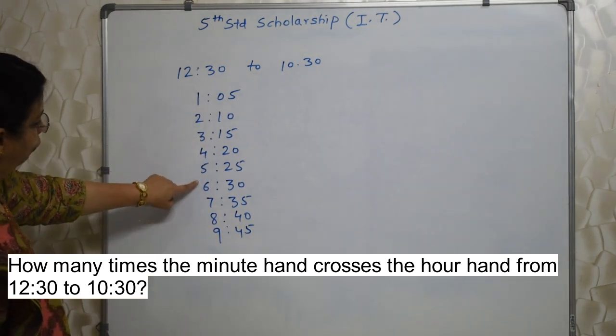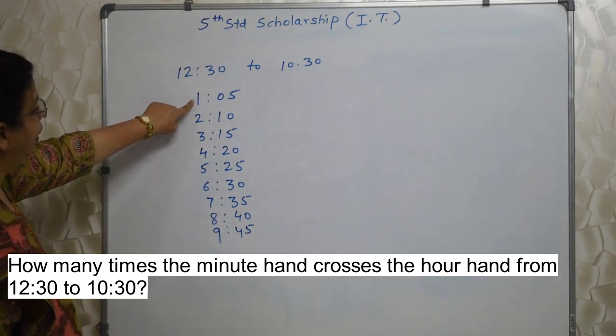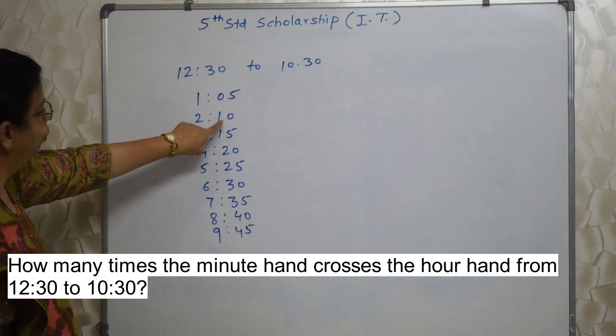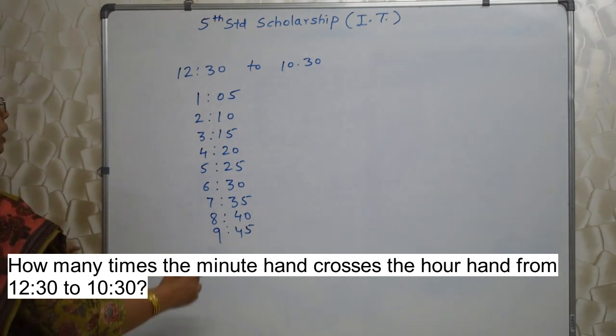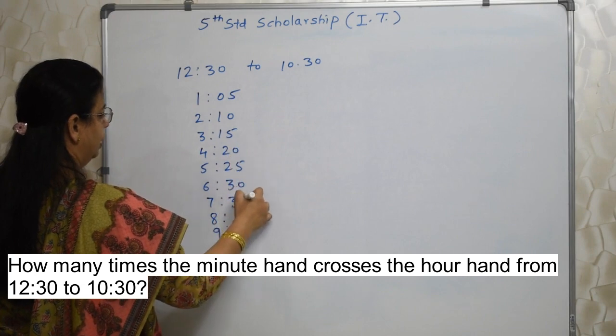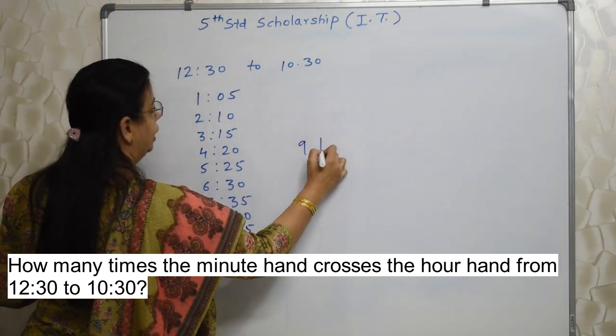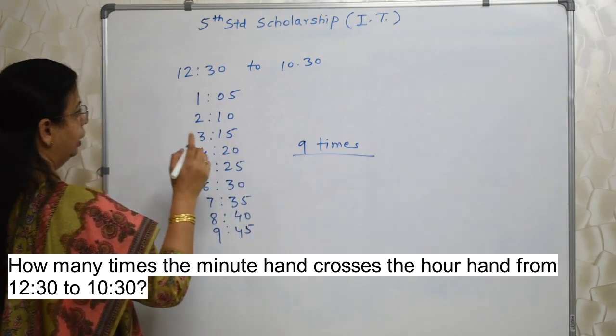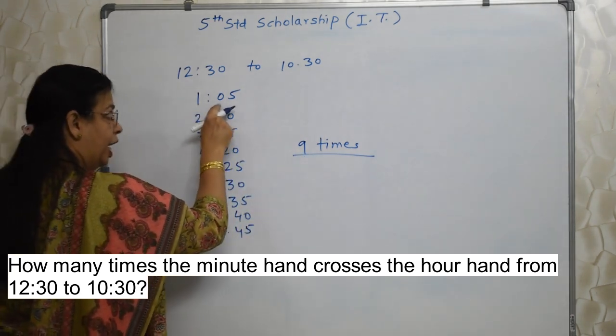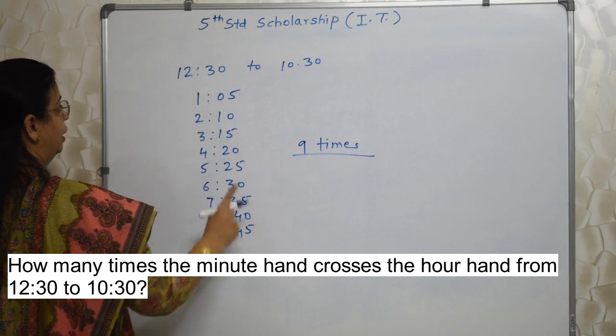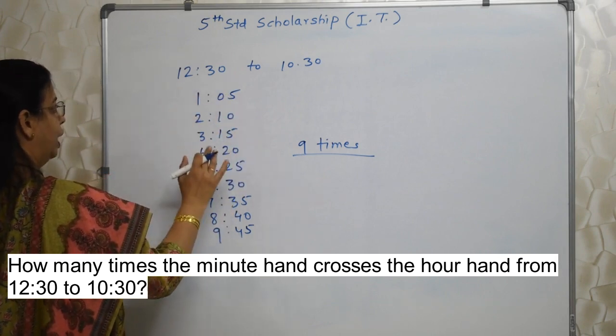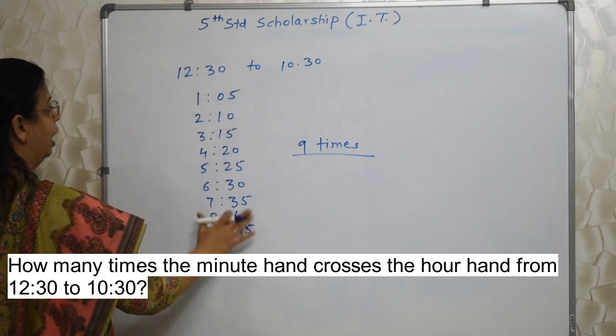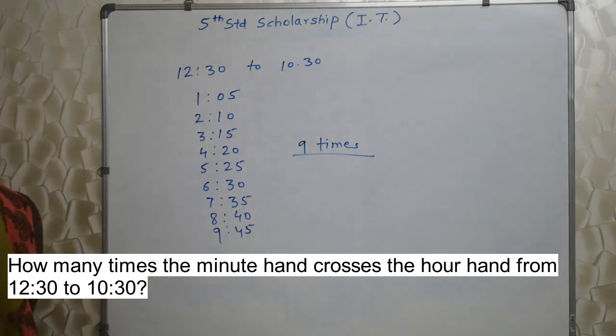You can remember this: 5 times 1 here, 5 times 2 here, 5 times 3 here, that way you can remember. So how many times? 1, 2, 3, 4, 5, 6, 7, 8, 9. So 9 times. Actually they do not pass exactly at 1:05, I again repeat. For eighth standard we have a different topic for this altogether. But for you at fifth standard, you can roughly believe this and go ahead. Answer is 9 times.